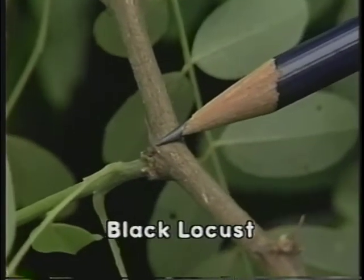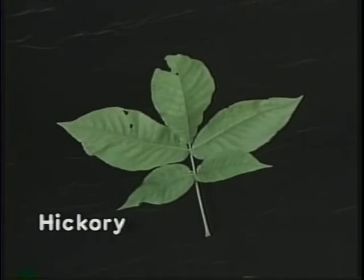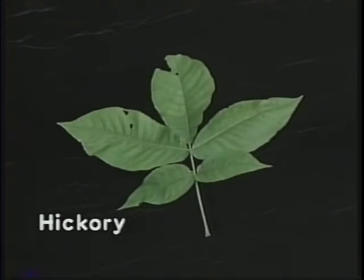Hickories as a group are identified by their pinnately compound leaves arranged on the twigs in an alternating pattern. The leaflets number from five to seventeen, roughly oval in shape and finely serrated. The overall measurement of the leaf is approximately seven to twenty inches with a single terminal leaflet.